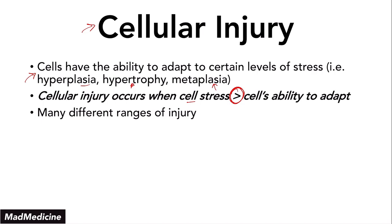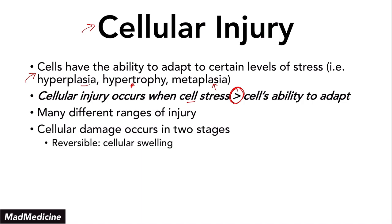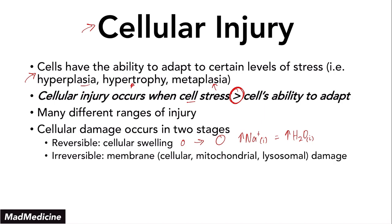Cellular damage is mainly going to occur in two stages. The first stage is reversible cellular injury, characterized by cell swelling — the cell grows in size because you stop the sodium-potassium pumps, causing an increase of intracellular sodium. And that means you'll also have an increase in intracellular water concentration, simply because water follows sodium. If at the reversible injury stage you continuously apply stress, the cell will progress to the irreversible injury stage, where membrane damage occurs not only at the cellular level but also at the organelle level — at the mitochondria and the lysosomes.